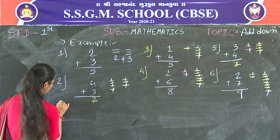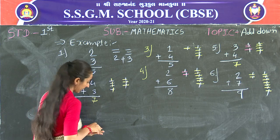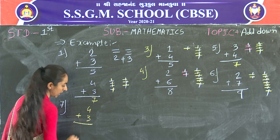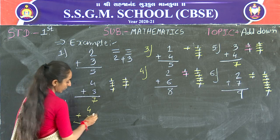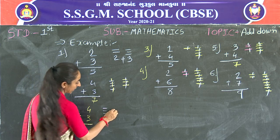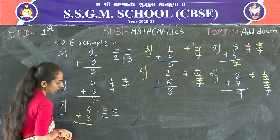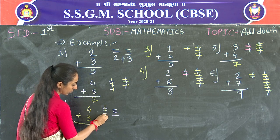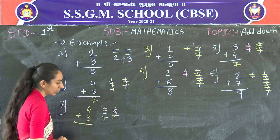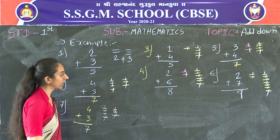Next — the 7th one: 4 plus 3. You draw 4 lines: 1, 2, 3, 4. Now draw 3 lines: 1, 2, 3. Count all the lines: 1, 2, 3, 4, 5, 6, 7. 4 plus 3 is equal to 7.